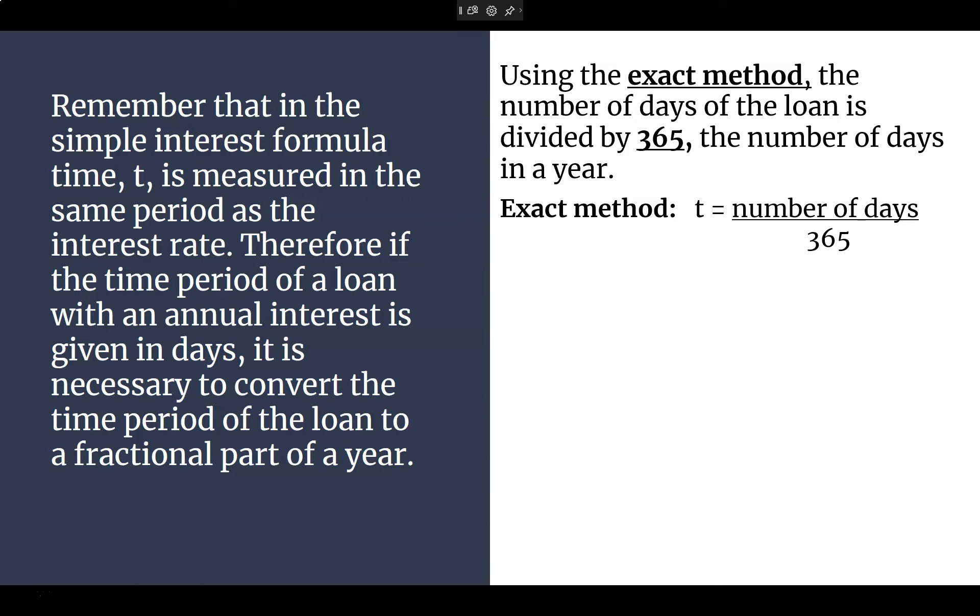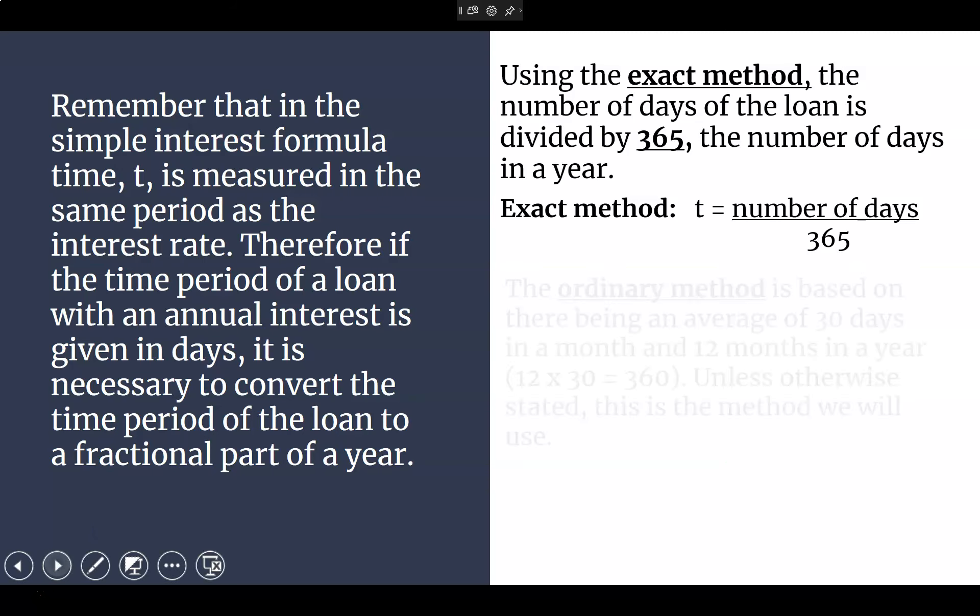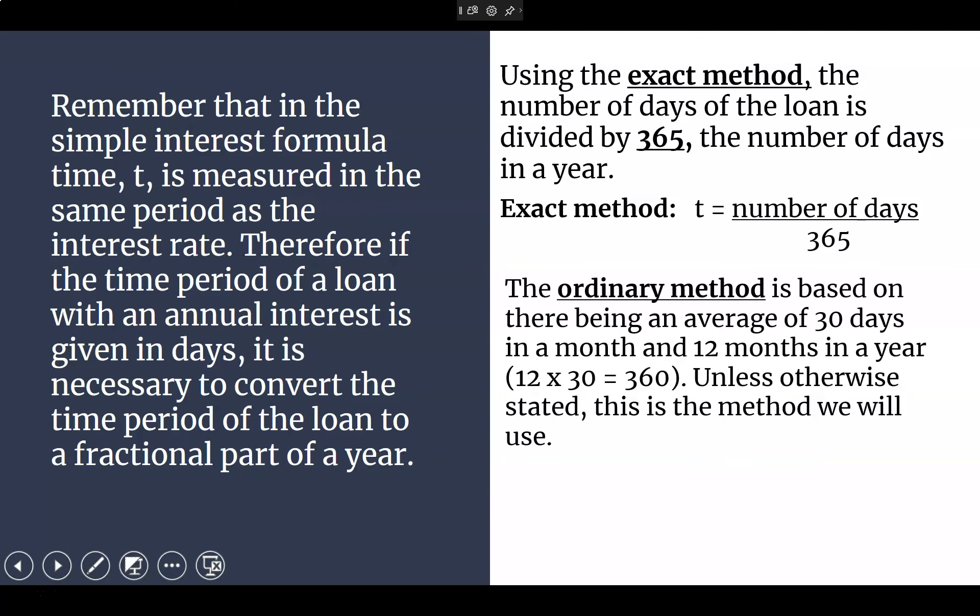Now, every month has different days, right? Some 30, some 31, and you got February. You might have 28, might have 29, right? It's different. So there's another method called the ordinary method where we take more like the average of our days. Ordinary method is based on an average of about 30 days a month multiplied by 12. We would use 360 in our ordinary method.